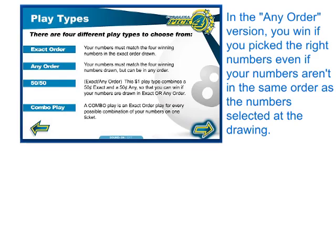So for example if you pick let's say 3, 7, 3, 5 and if at the drawing the numbers that appear are 3, 3, 5, 7 then you would win.